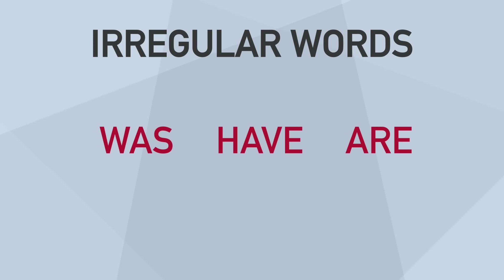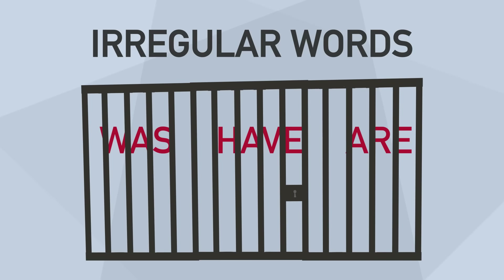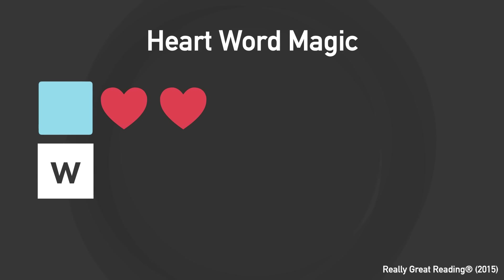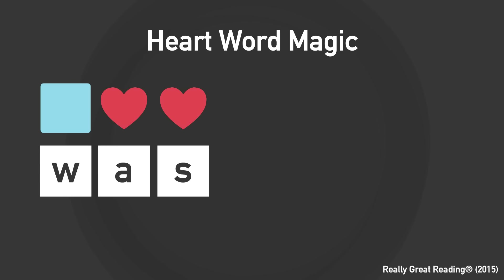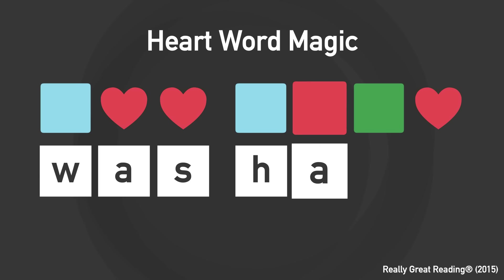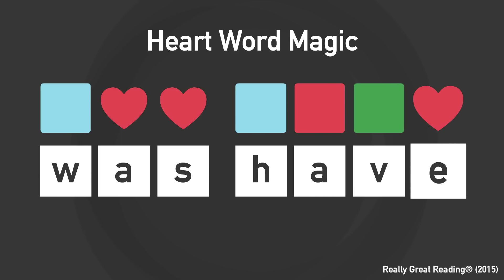Which brings us back to those phonetically irregular words from the kindergarten list. Luckily, decoding and encoding can still be used to aid in learning these rule-breaking words. A strategic method developed by Really Great Reading is called heart-word magic. Using this method, teachers emphasize spelling-to-sound relationships, pointing out the phonetically regular parts of the word and directly teaching the irregular parts — the parts that need to be learned by heart — through direct teaching of the unique spelling, facilitating orthographic mapping.